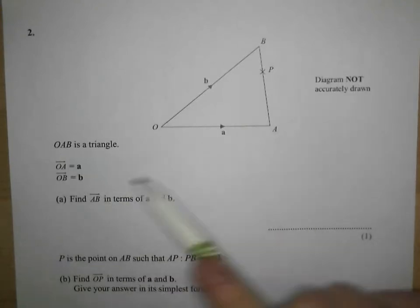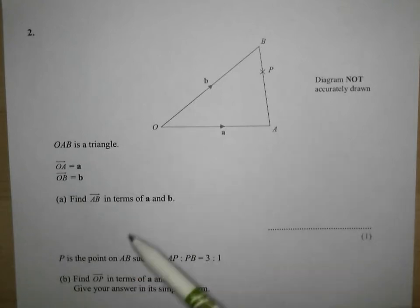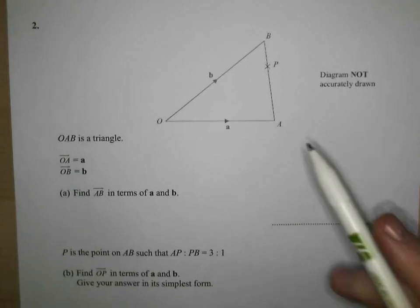OAB is a triangle. OA equals a, OB equals b. Find AB in terms of a and b. Alright, I'm going to do my same technique.